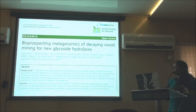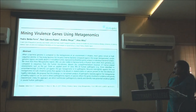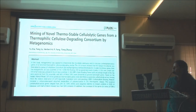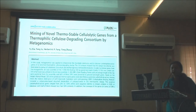Another case study is bioprospecting metagenomics of decaying food, mining of novel glyphosate hydrolases — in this study they could isolate 4 novel genes from the glyphosate hydrolase family. Similarly, there are case studies on mining virulent genes using metagenomic islands, and cross-biome metagenomic analysis of soil microbial communities and their functional attributes. These case studies highlight how genes of specific interest are mined from data across various environmental niches.